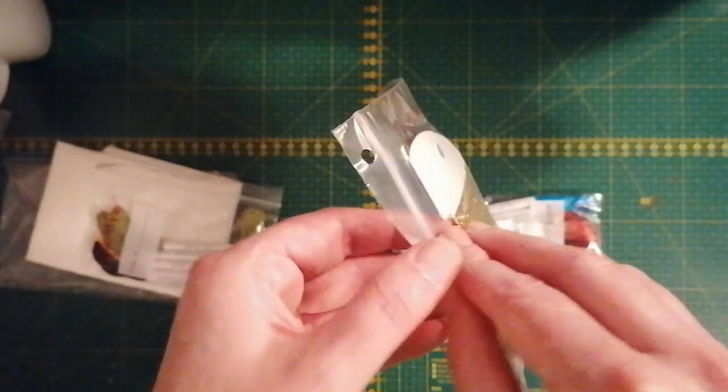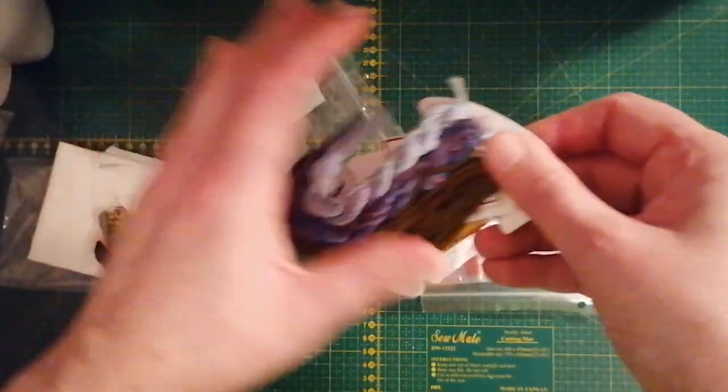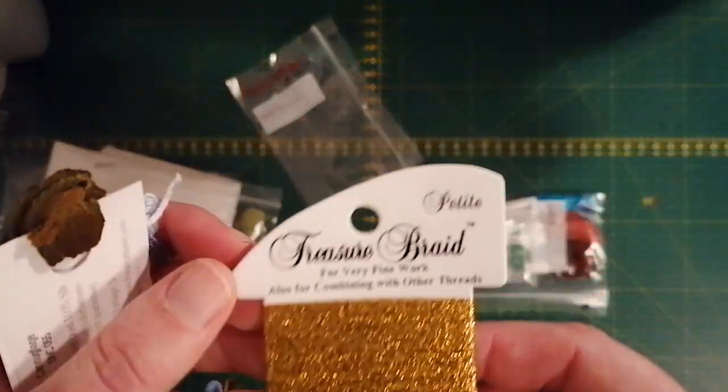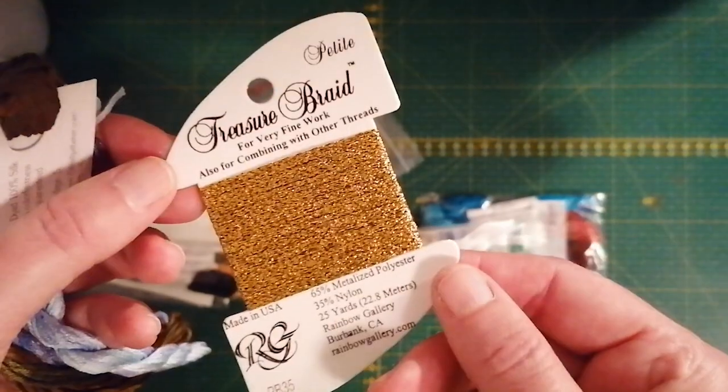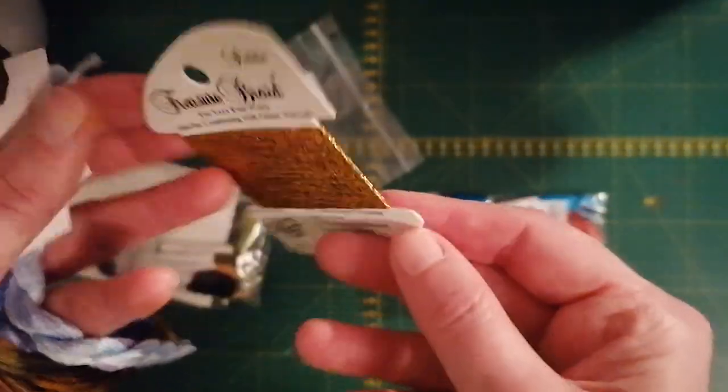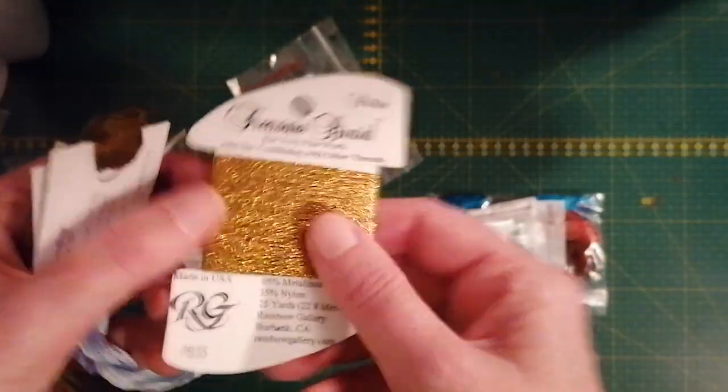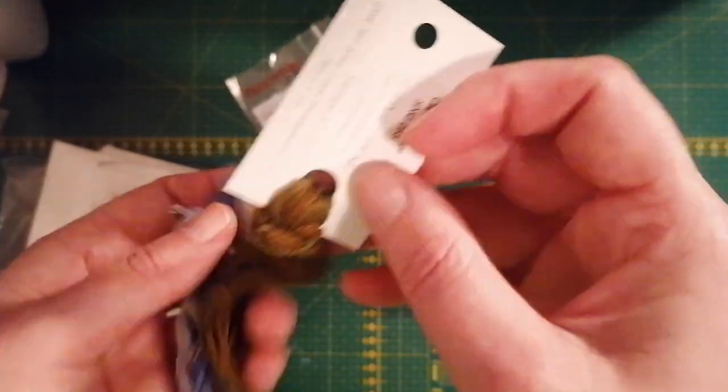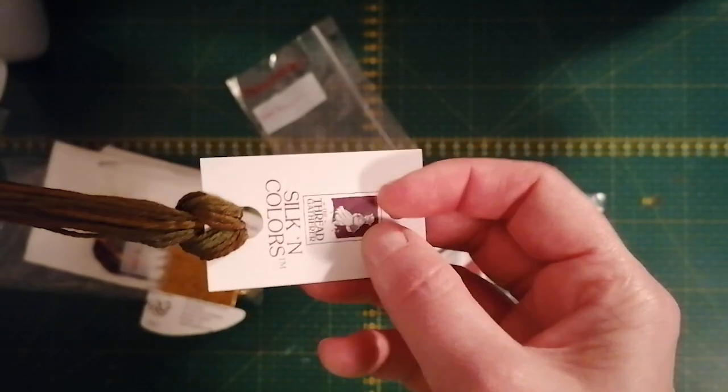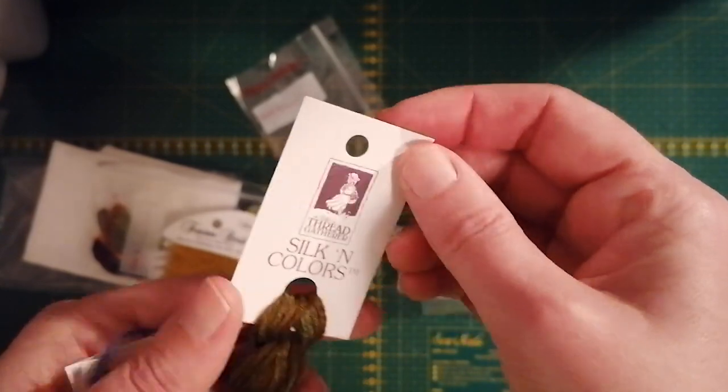Then we have some other beautiful specialty threads. You have the Treasure Braid Petite, number 35. I like to stitch with this when it's metallics. And I love when threads come on these thread drops. We have some Silken Colors from the Thread Gatherer.